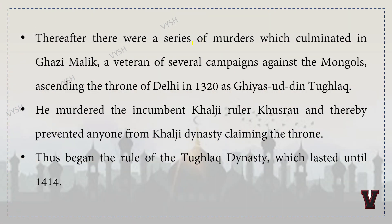Thereafter a series of murders culminated in Ghazi Malik, a veteran of several campaigns against the Mongols, ascending the throne of Delhi in 1320 as Ghiyasuddin Tughlaq. He murdered the incumbent Khalji ruler Khusrau, preventing anyone from the Khalji dynasty from claiming the throne. Thus began the rule of the Tughlaq dynasty, which lasted until 1414. The Tughlaq dynasty will be covered in the next chapter.